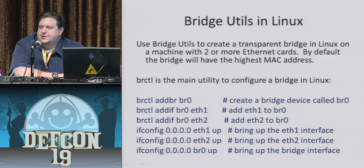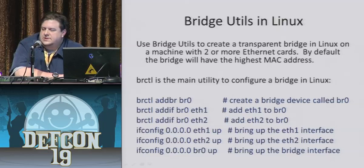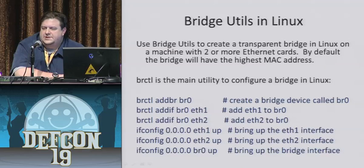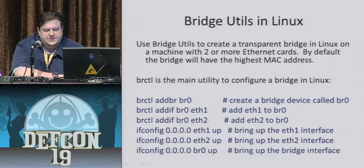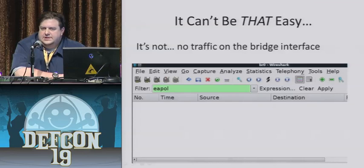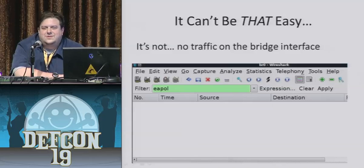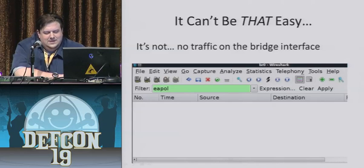Setting up a bridge is fairly straightforward. You create the bridge interface — in this case I use BR0. You add NICs to the bridge interface, bring everything up: one side, the other side, then the bridge interface. So what happens when you hook up an 802.1x connection with just a straight bridge in Linux? Not much. Couldn't be that easy, could it?